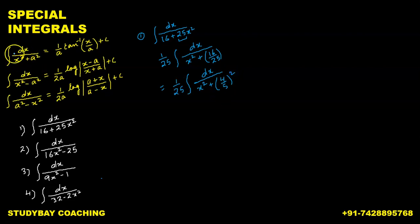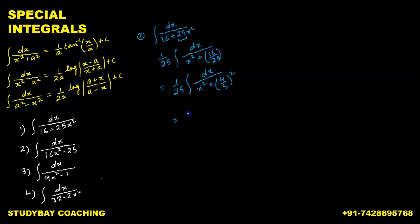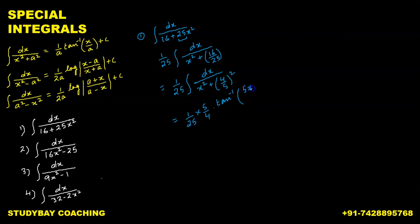This is now in the format of dx upon x² plus a², where a equals 4/5. The integral of that form is 1 upon a times tan inverse of x upon a. So, 1 upon a becomes 5 upon 4. This gives us 1 upon 25 times 5 upon 4 times tan inverse of x divided by (4/5), which equals tan inverse of 5x upon 4, plus c.